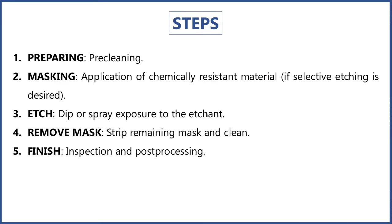The different steps involved in this process are: first, preparation — cleaning the workpiece with water or acid; then masking — the application of a chemical-resistant material; then scribing where etching is desired; then dipping or spraying for exposure to the etchant, which is the etching process; then removing the mask (stripping); then cleaning; then inspection; and finally post-finishing.